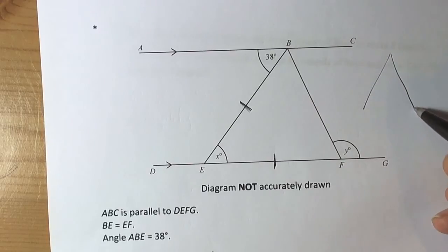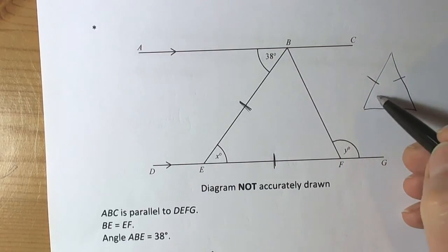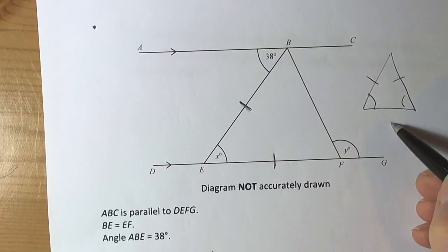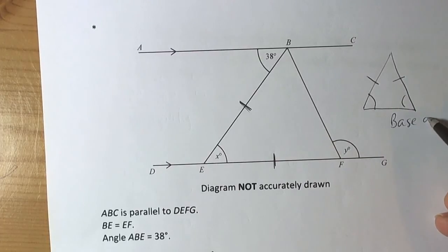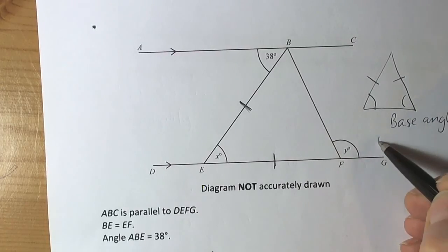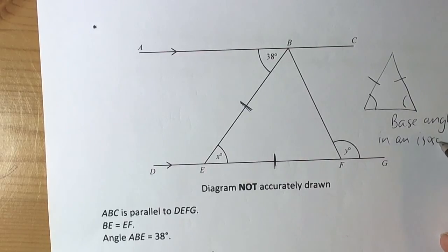We've got to have in mind that isosceles triangles have the property that base angles in an isosceles triangle are equal.